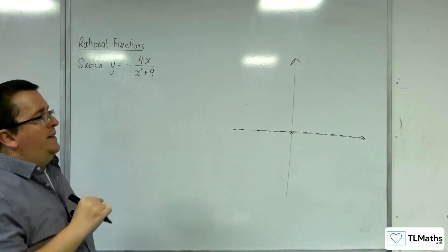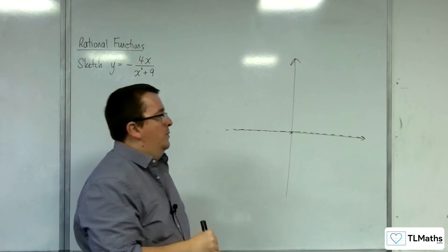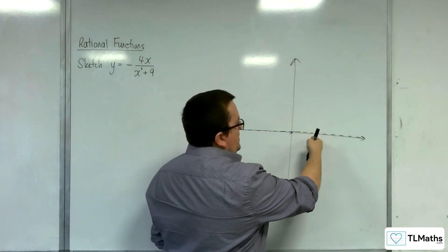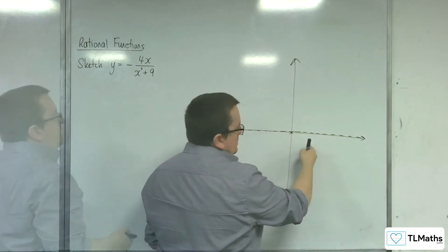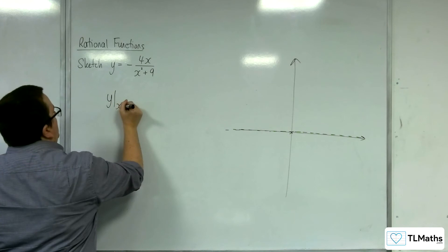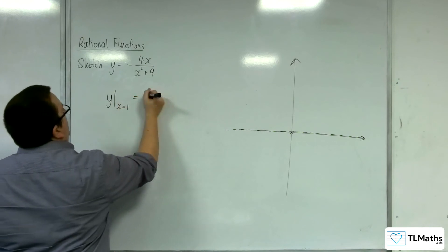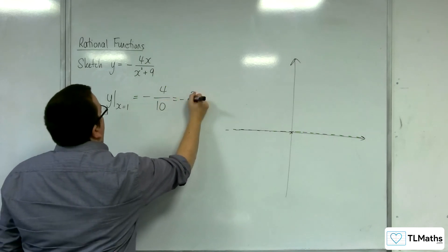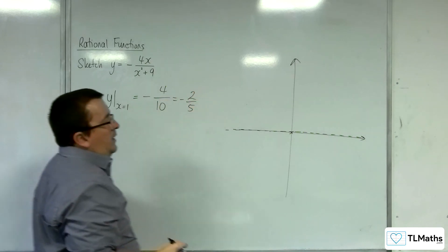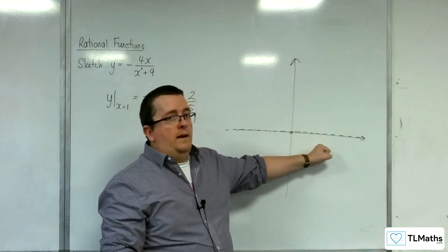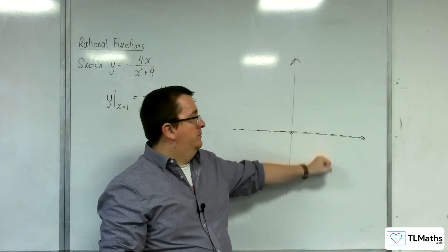So really, all I need to do is check a value to the right of the y-axis, just to see if we're above or we're below. So if I substitute x equals 1 in, I get y when x is 1. I get minus 4 over 1 plus 9, so 10, so minus 2 fifths. And so it's negative. So I know that when we're to the right of the y-axis, we are in the negative, we're below the x-axis. So it's got to be doing this.